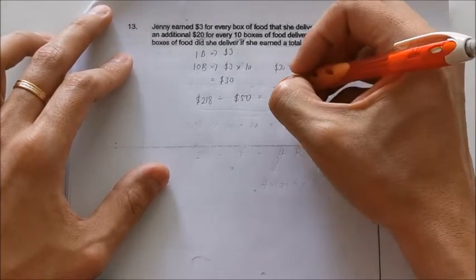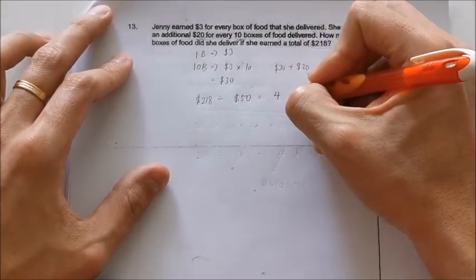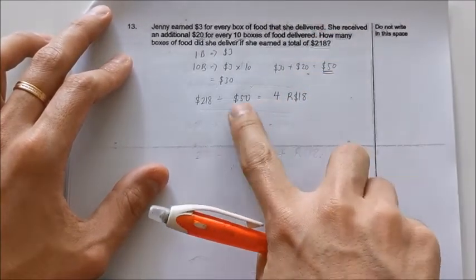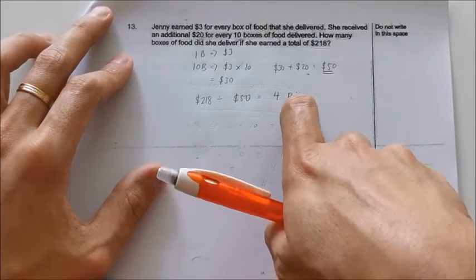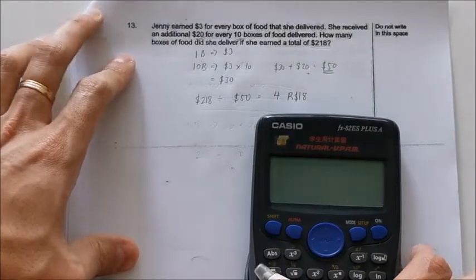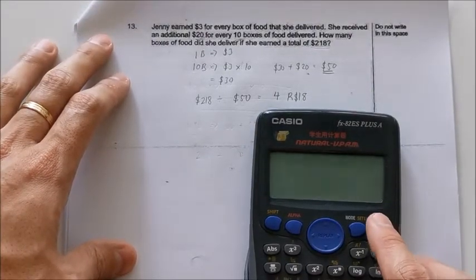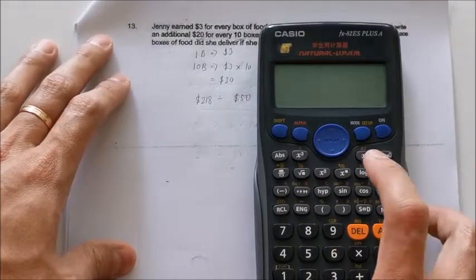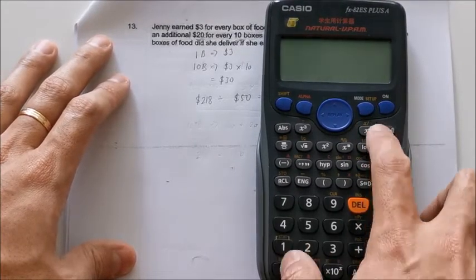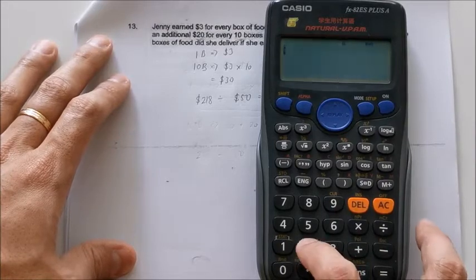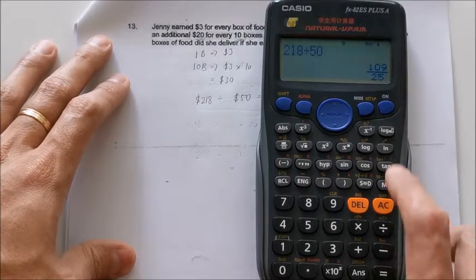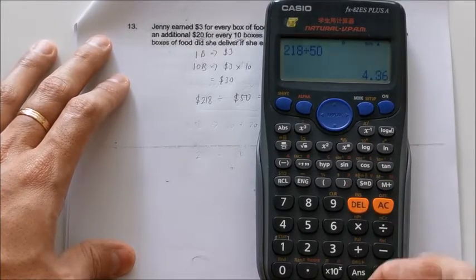The answer has to be 4 remainder 18. So you have 4 sets of $50 plus $18 which is the remainder. How to find the remainder? Some students are a bit unsure, so I'll just show it to you using the calculator. So I'll take 218 divided by 50. You can see that you'll get this number. Change it to decimal, 4.36.